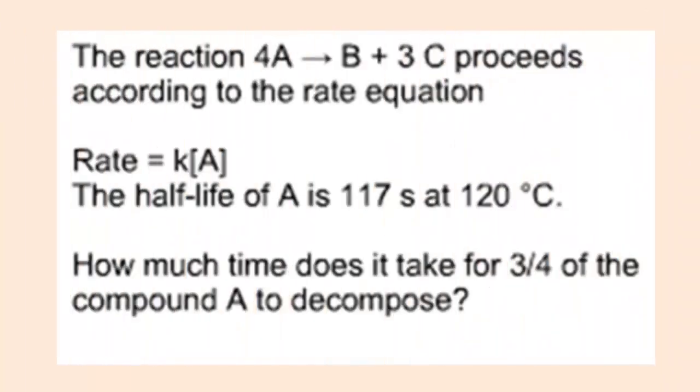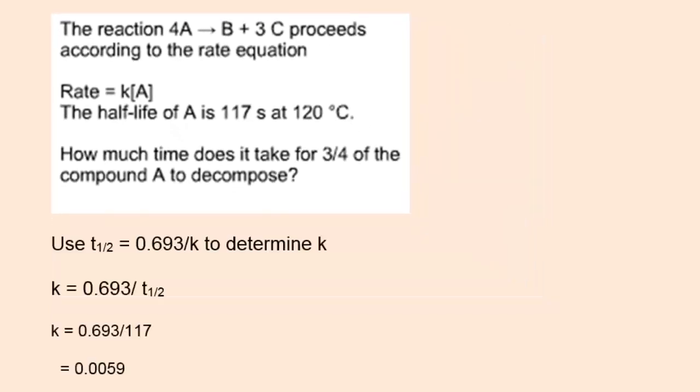In this problem, we're given the half-life of a first-order reaction and asked to determine how much time it takes for three-quarters of the reactant to decompose. We first use the half-life to determine the rate constant, K. Rearrange the equation half-life equals 0.693 divided by K to determine what the value of K is. In this case, it's 0.0059.